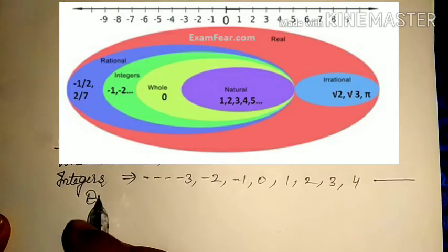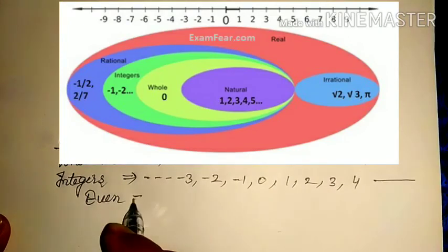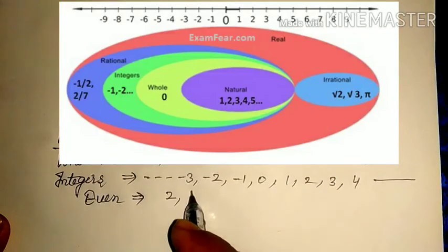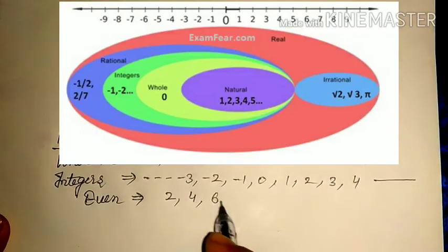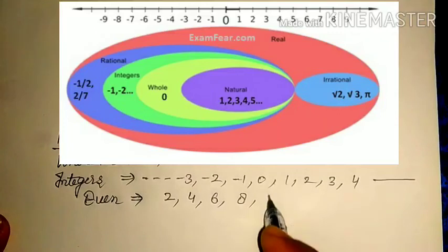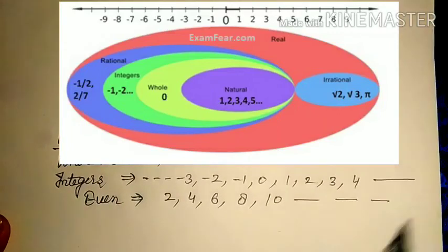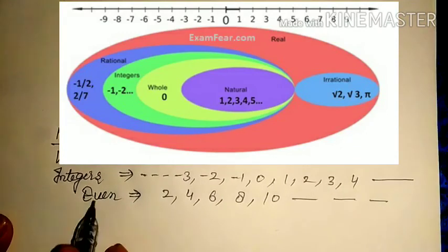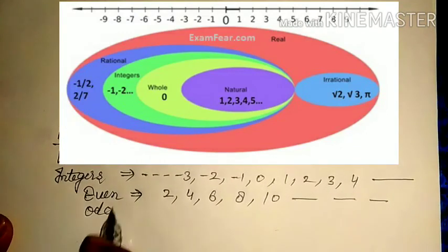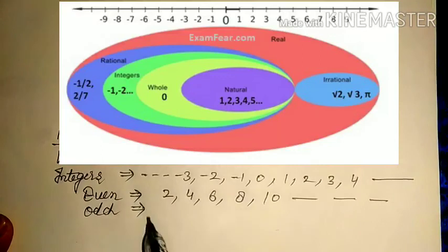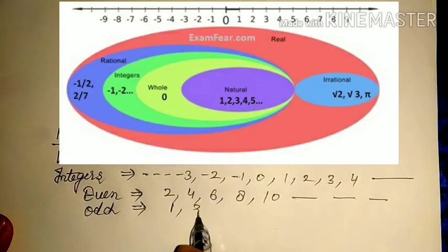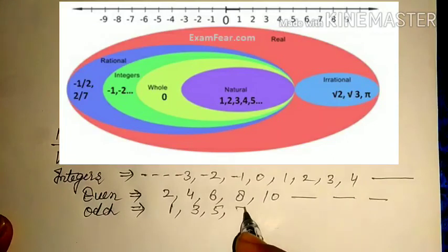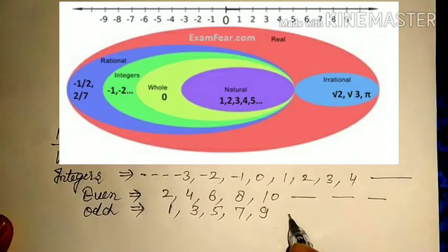Even numbers: a number which is divisible by two is known as an even number.